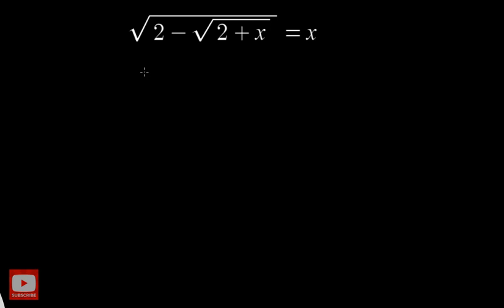Before doing any operations on this equation, we have to look at the domain of x — that is very important for this problem. What are the possible values that x can take? On the left side we have a square root equal to x. Since the square root of any number is always positive, x has to be greater than or equal to zero. That's the first condition.